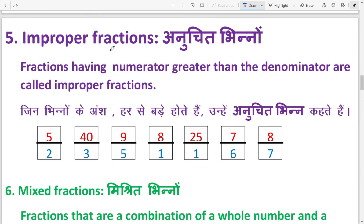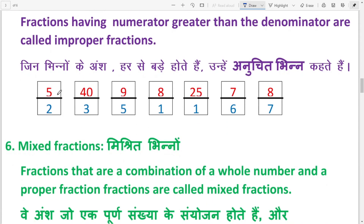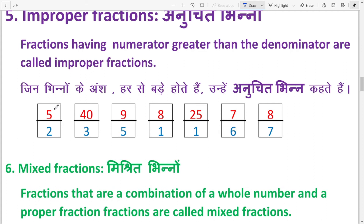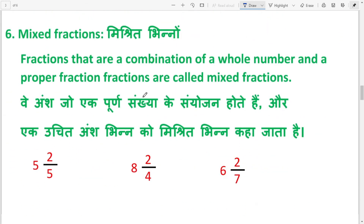Next: Improper fractions, meaning 'anuchit bhin'. Fractions having numerators greater than the denominators are called improper fractions — जिन fractions के numerators denominator से बड़े होते हैं वे improper fraction कहलाते हैं. For example, in 5/2, the numerator is greater than the denominator.